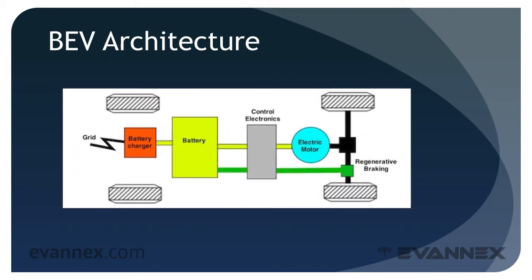The simplest of all EV architectures is the battery electric vehicle, the BEV. In a BEV, there is a limited set of basic components associated with the propulsion of the vehicle. Looking at the diagram on your screen from left to right, electricity from the grid is conditioned by a charger, represented in orange, that may be part of the vehicle or a separate component. The charger passes electricity to the battery, shown in yellow.